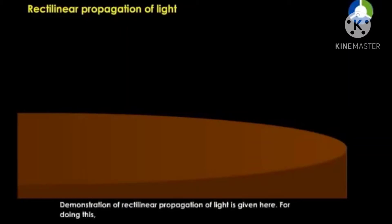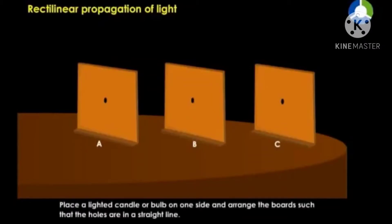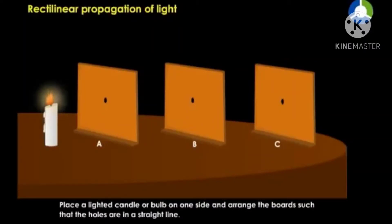Demonstration of rectilinear propagation of light is given here. For doing this, take three cardboards A, B and C with fine holes at their centers. Place a lighted candle or bulb on one side and arrange the boards such that the holes are in a straight line.